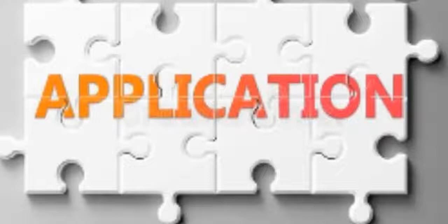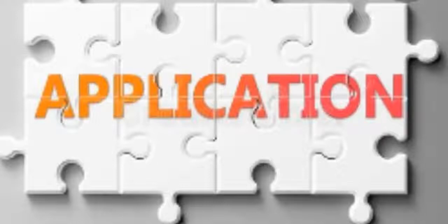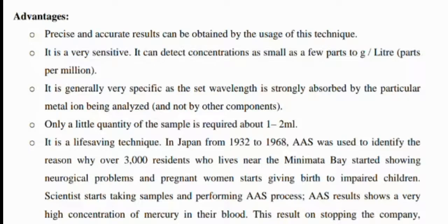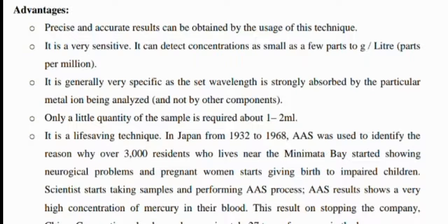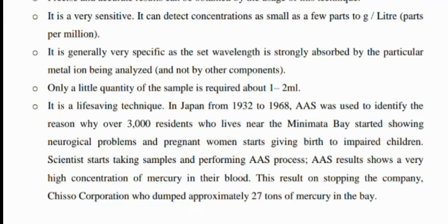Let's start with the advantages of atomic absorption spectroscopy. First, it provides precise and accurate results. It is very sensitive — it can detect concentrations as small as a few parts per gram per million. It is also generally very specific, as a set wavelength is strongly absorbed by a particular metal ion being analyzed. Additionally, only a small quantity of sample is required, about one to two milliliters.